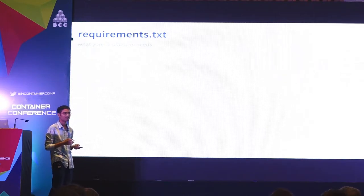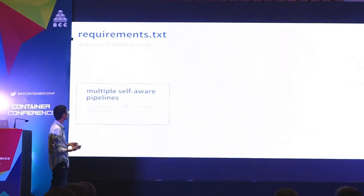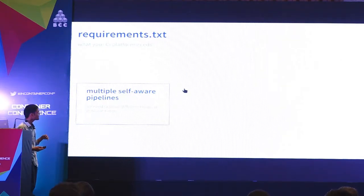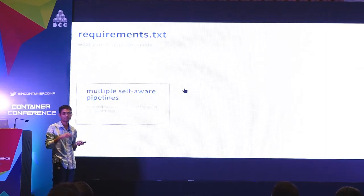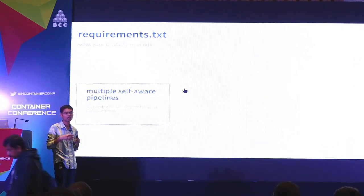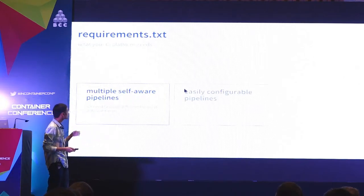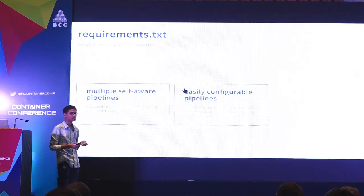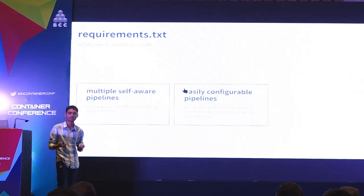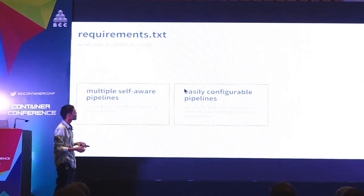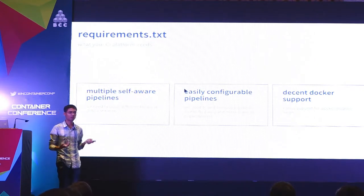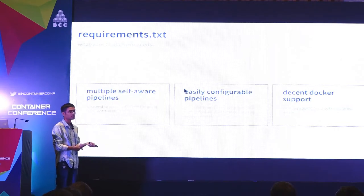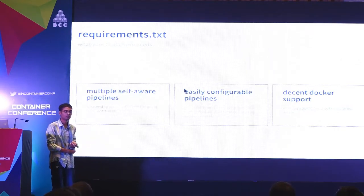This is the list of things your CI tool must support for our solution to work. We need multiple self-aware pipelines — 'self-aware' meaning it should know: I'm building not just my current Docker image, but I should know the next three images that will spin off from me. We also need easily configurable pipelines — a mechanism to add and remove pipelines via API or code. And decent Docker support — including native support for Docker plugins so you can run linting and other things on Docker.